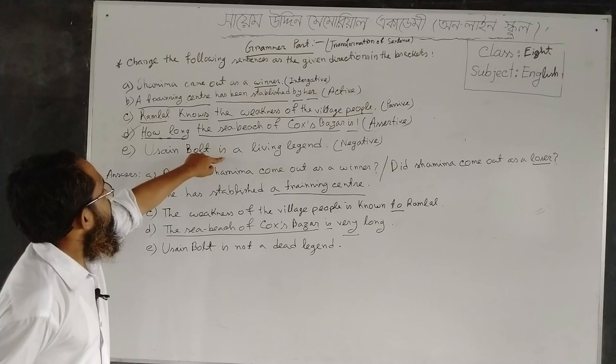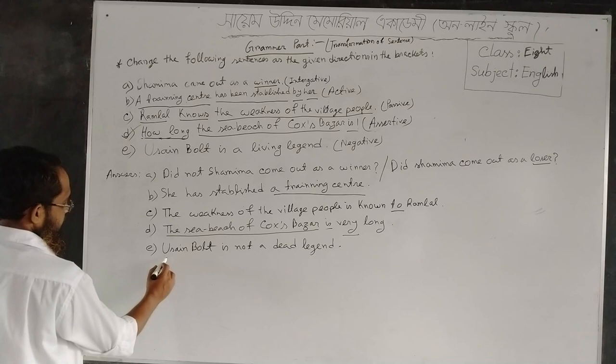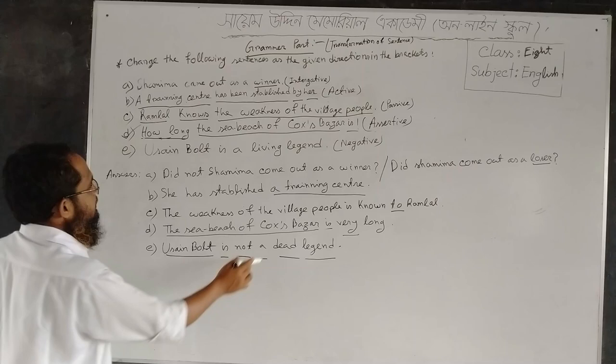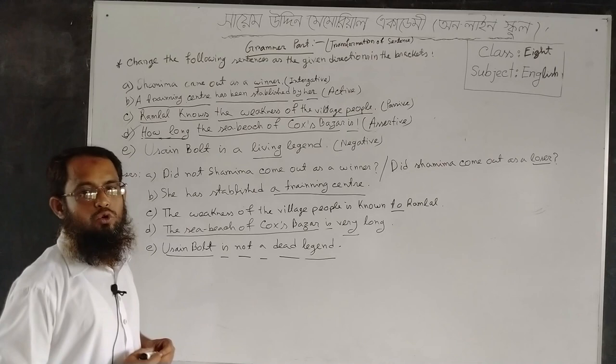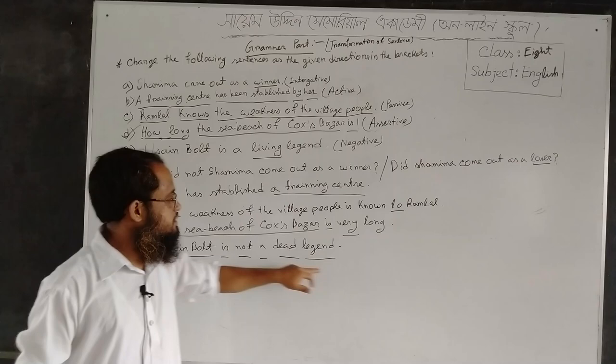Here you can see there is no negative sign, so you have to take a negative sign. The answer goes: Usain Bolt is not a dead legend. Here you can focus on the word 'dead' — it is the antonym of 'living'. Obviously Usain Bolt is not a dead man; he is still alive. So Usain Bolt is a living legend — the negative form of this sentence is: Usain Bolt is not a dead legend.